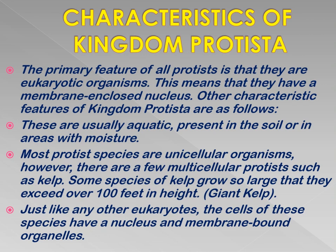Other characteristic features of Kingdom Protista include the following: they are usually aquatic organisms, also found in soil or in areas with moisture. Most protist species are unicellular organisms; however, there are a few multicellular protists, such as kelp. Some species of kelp grow so large that they exceed over 100 feet in height — they are known as giant kelp.